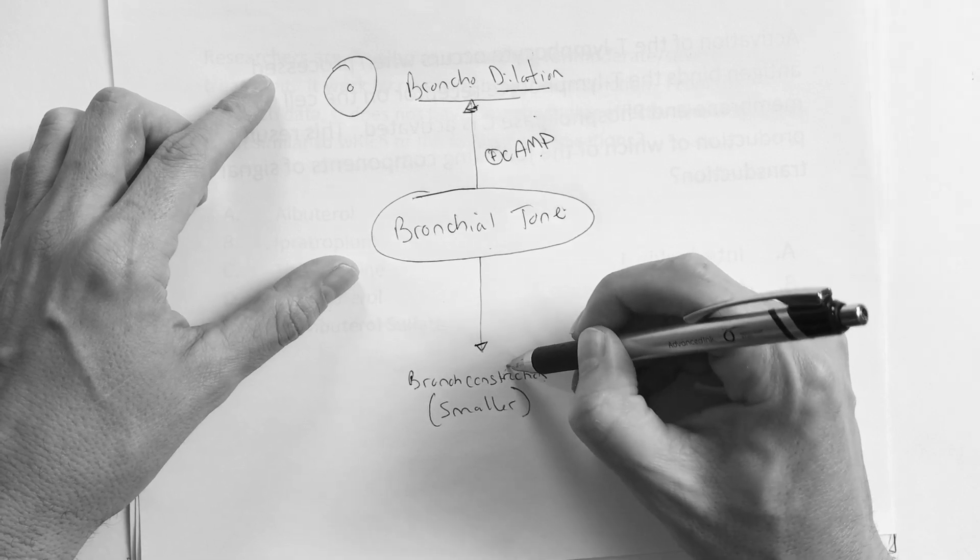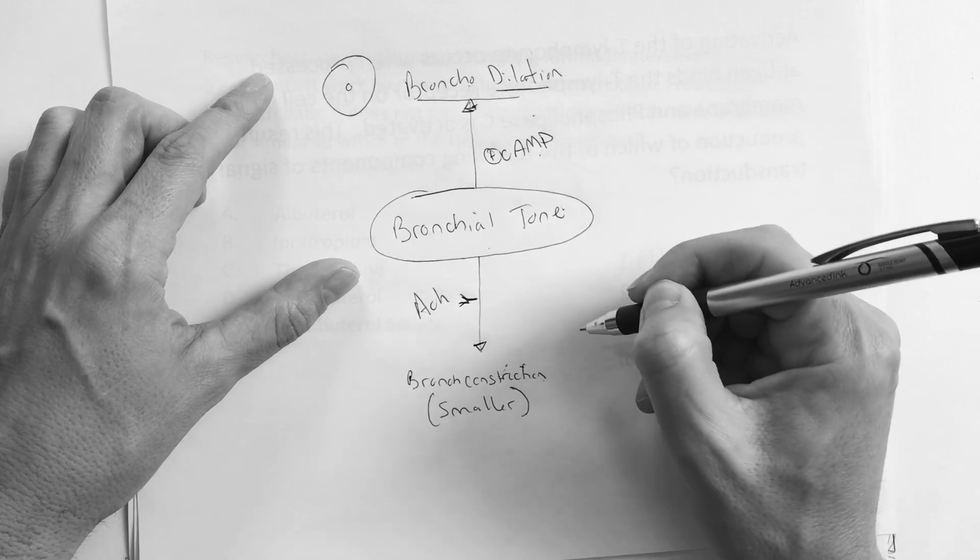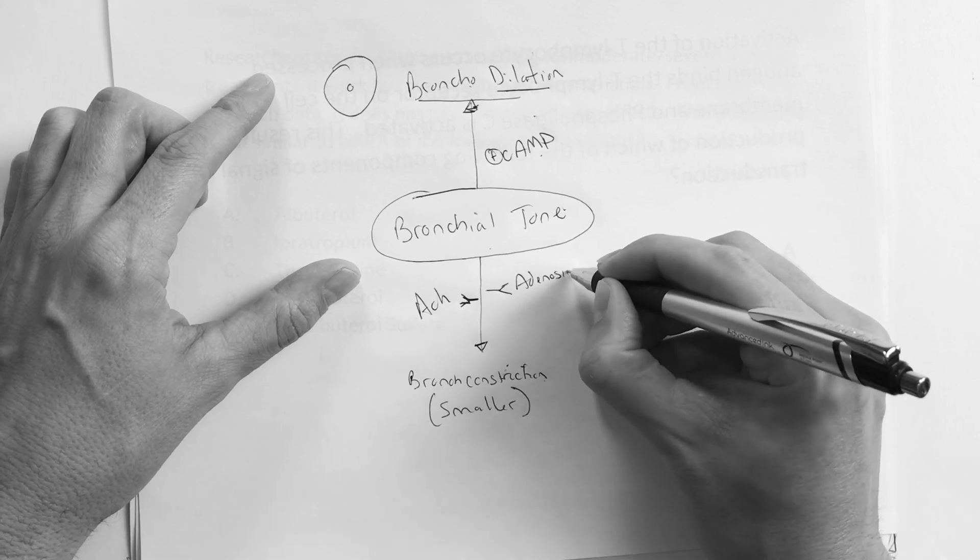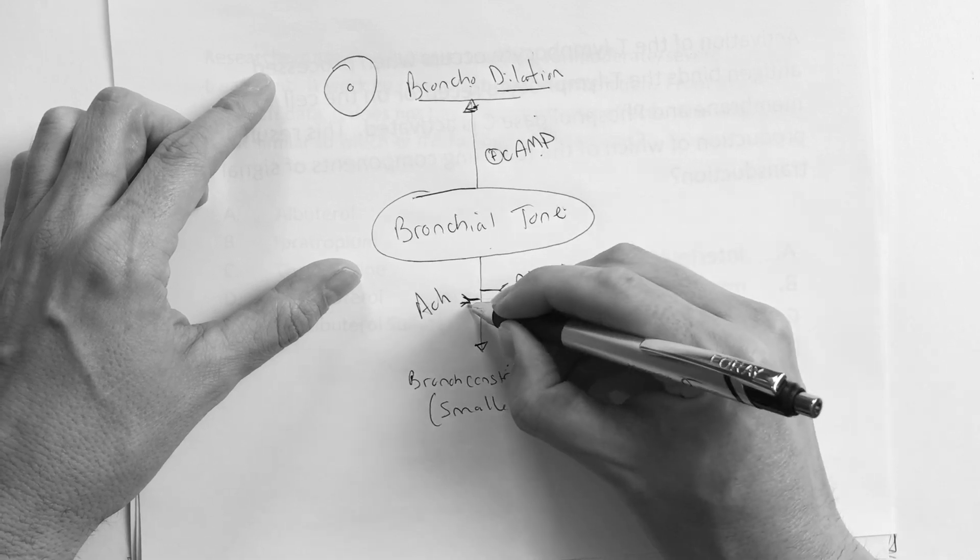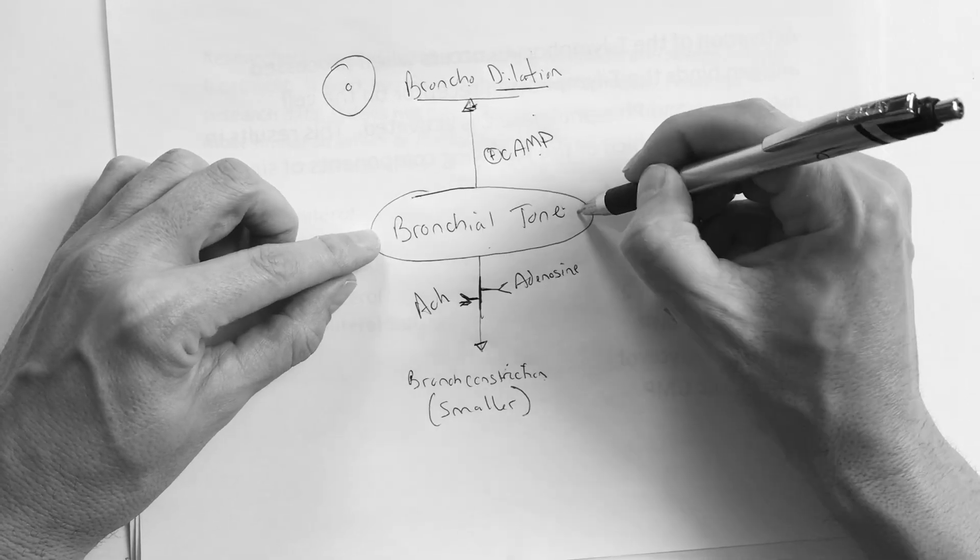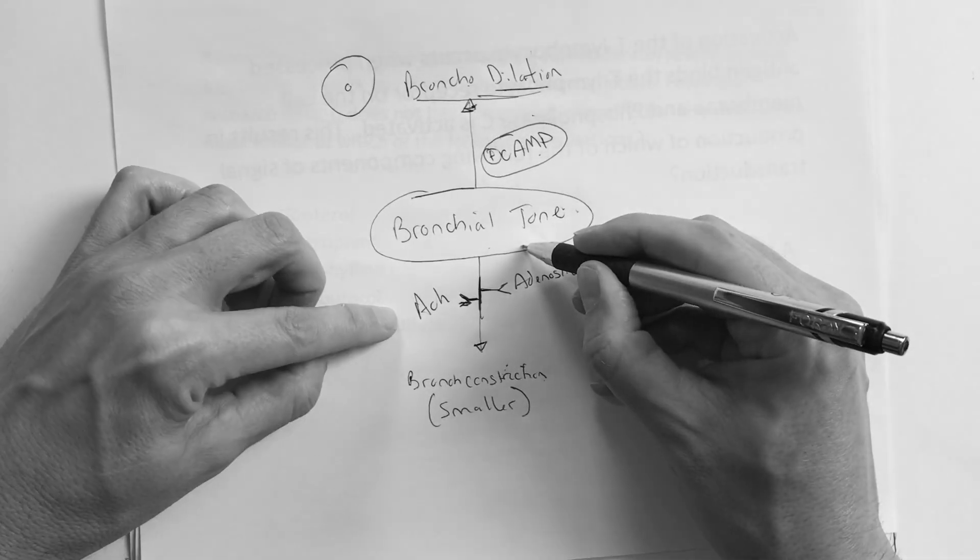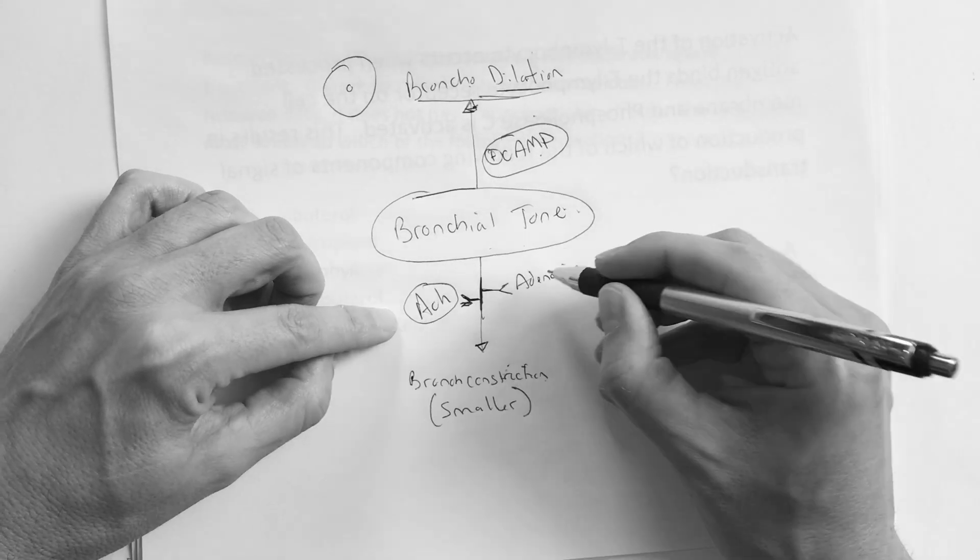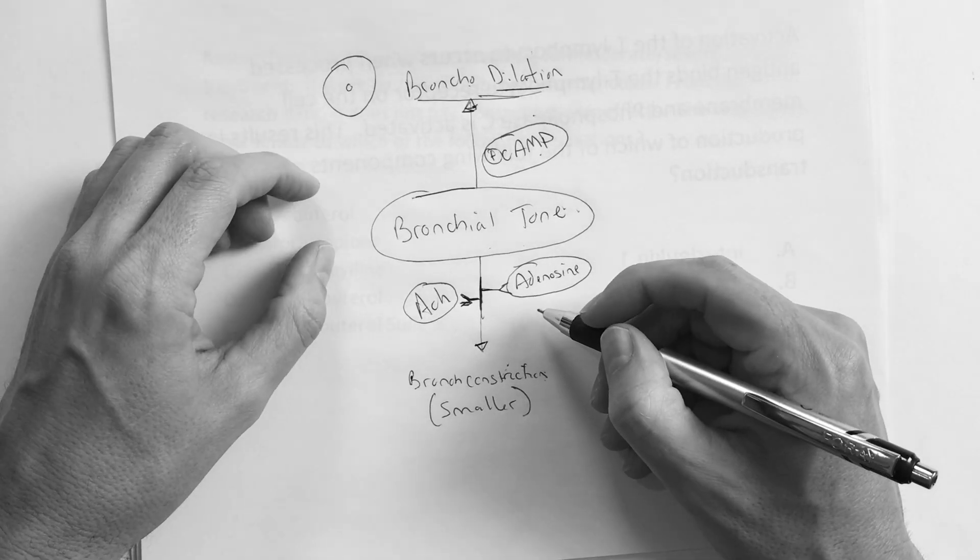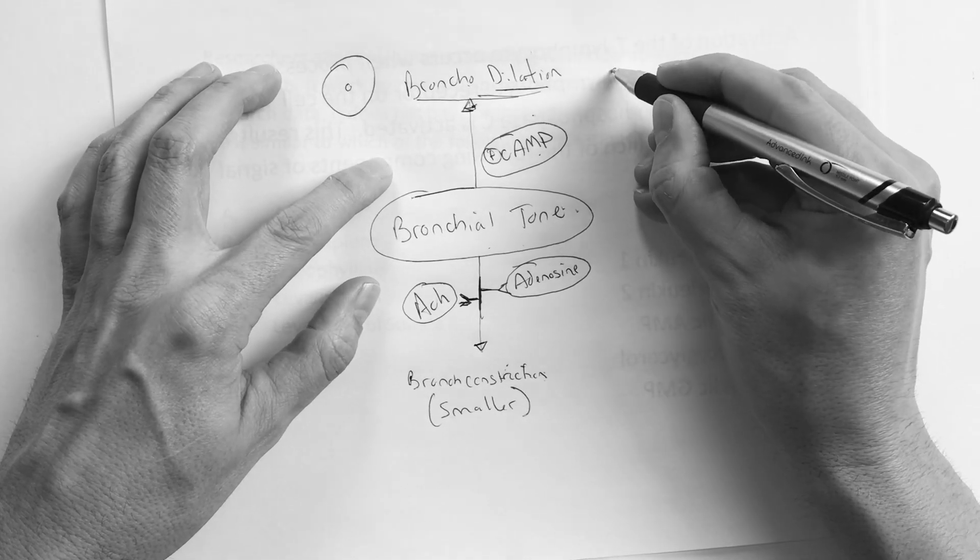What makes it? Well, bronchodilation - what's the natural thing that God did to allow us to dilate? Cyclic AMP. If I'm in the lungs and I get some cyclic AMP, then I'm going to bronchodilate. If I'm in the lungs and I want to constrict, it's going to be acetylcholine or adenosine. This just represents a receptor.